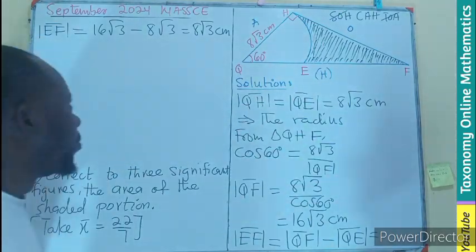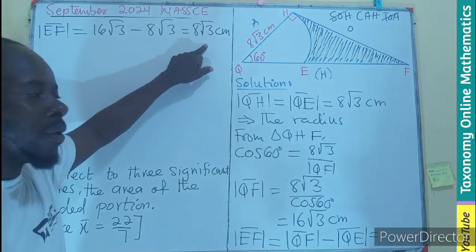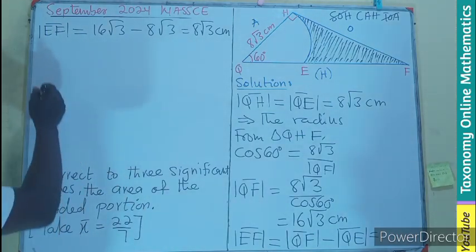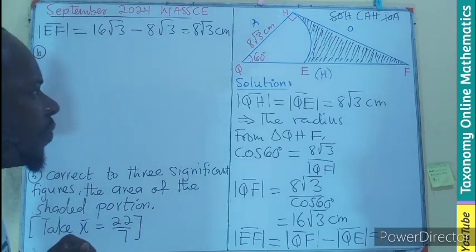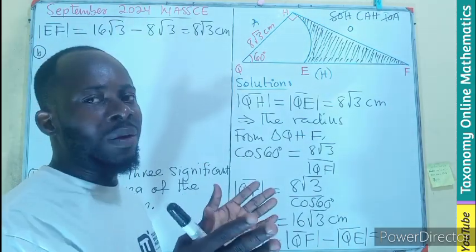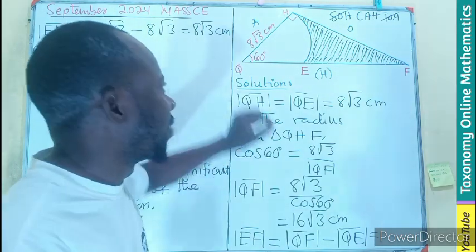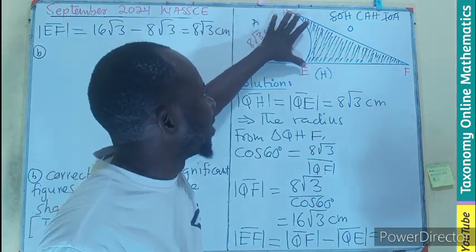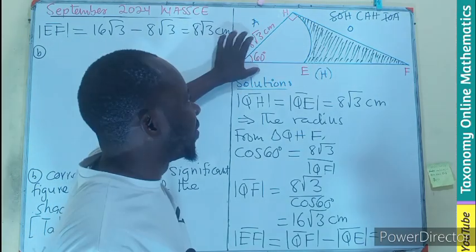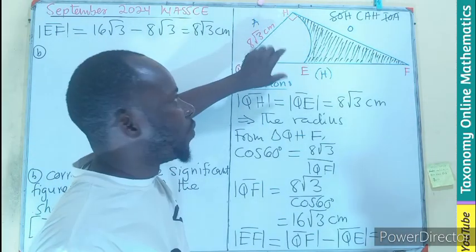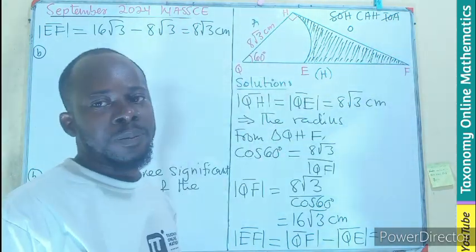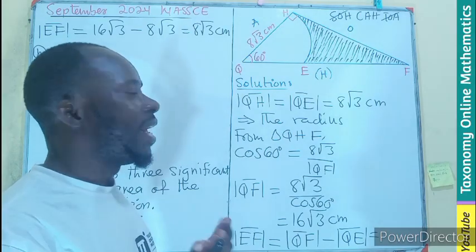The next thing to find is the area. If you look at the whole thing without the shaded part, you will see a triangle as the bigger part. Then after that you will also see the sector with angle 60. If you take away this sector from the main triangle, you are left with the shaded part.